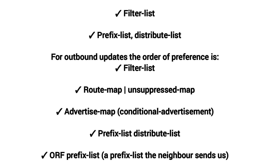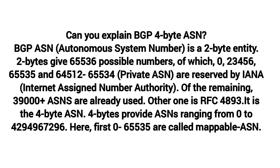Can you explain BGP 4-byte ASN? BGP ASN (Autonomous System Number) is traditionally a two-byte entity. Two bytes give 65,536 possible numbers, of which 0 through 65,535 are usable, and 64,512 through 65,534 are private ASNs reserved by IANA.